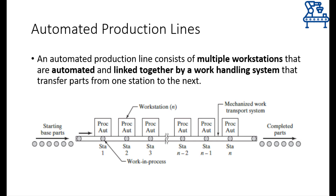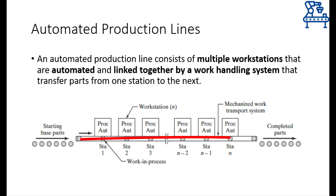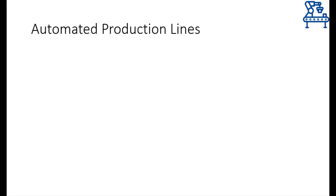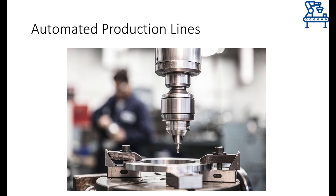Whatever is being done on the automated line, the most important thing is that all workstations are connected through a work handling system that is capable of moving the work unit from one workstation to the next as well as positioning it correctly for the workstation to perform the operation. This overall view of an automated production line is well depicted by the figure shown here. The starting work material enters the production line from one side and is transferred from one station to the next through automated means. On the outside, a production line consists of two things: the machine tools that will perform the required operation on the work unit, and the work handling system.